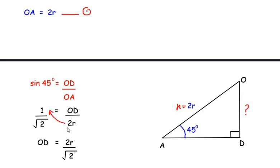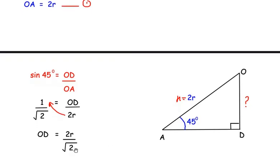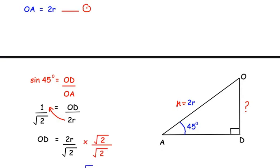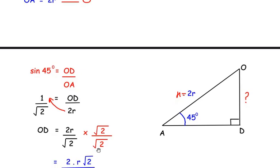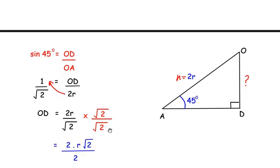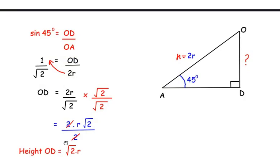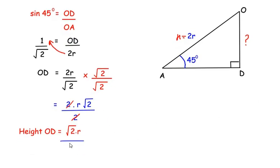Cross-multiplying gives OD equals 2r over root 2. Since we have a square root term in the denominator, we rationalize by multiplying numerator and denominator by root 2. This gives 2r times root 2 in the numerator and root 2 times root 2 equals 2 in the denominator. The 2s cancel, leaving OD equal to root 2 times r, which is what we had to prove.